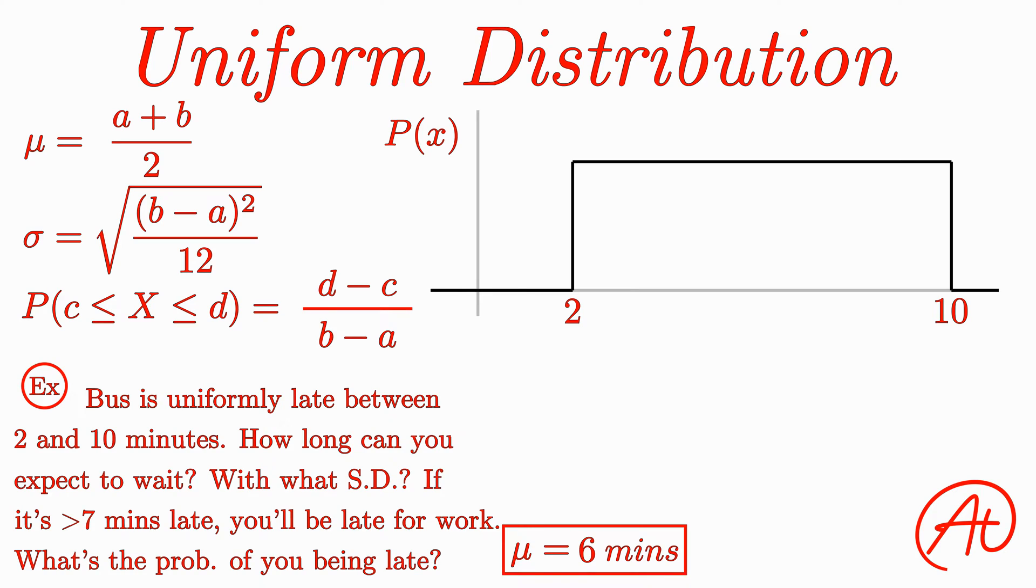Next, we want to calculate the standard deviation of our wait times. Using our standard deviation formula, we find that sigma is equal to the square root of 64 over 12, or about 5.33. And what this represents is that the wait times deviate from the mean on average an amount of 2.31 minutes.